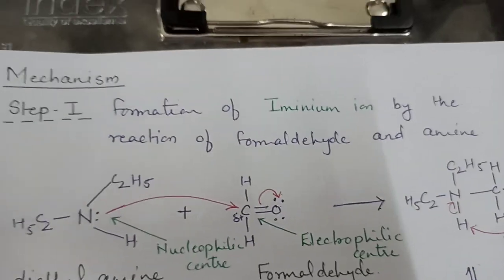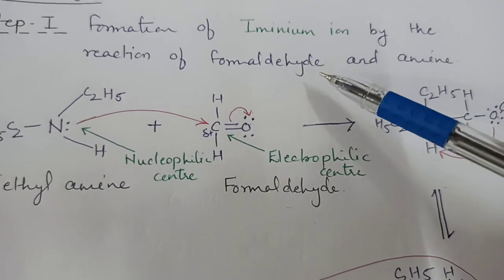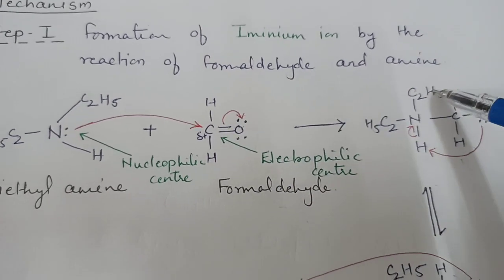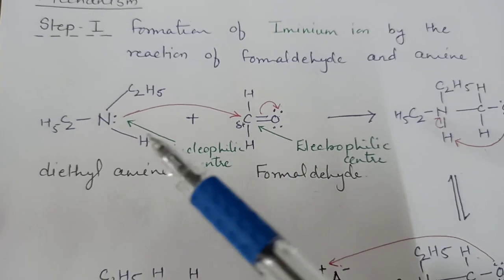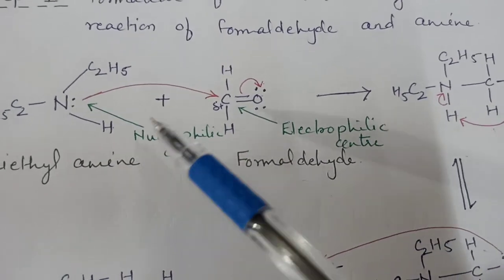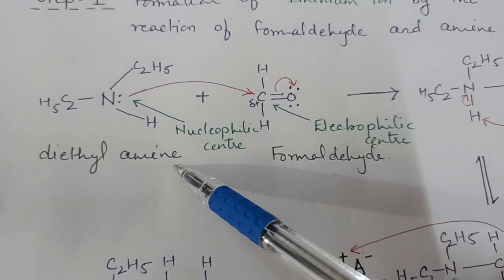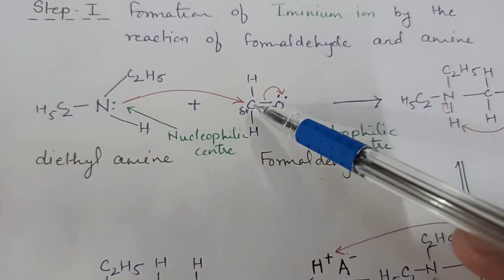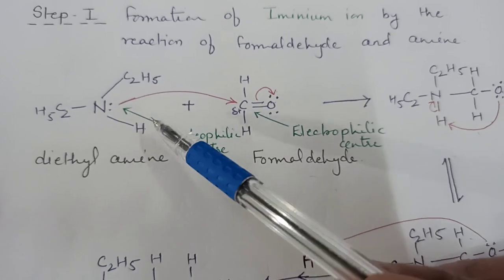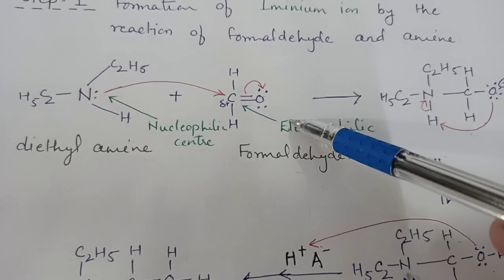The mechanism of the reaction involves two steps. The first step is the formation of the iminium ion by the reaction of formaldehyde and amine. Here, for explaining, I am taking diethylamine, which is a secondary amine. In the amine, the nitrogen acts as the nucleophilic center, and in formaldehyde, the carbon acts as the electrophilic center. So the first step is the reaction of the nucleophilic amine with the electrophilic carbon of formaldehyde.